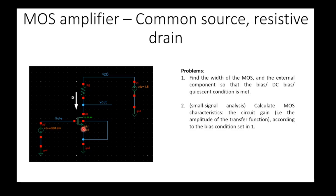Common source means the source is connected to ground — an AC ground. In this case you can see that the source is connected directly to ground, not even an AC ground, it's a DC ground. So in the small signal analysis this point is also an AC ground. And because the source is connected to a ground — an AC ground or a DC ground — we call the configuration a common source.